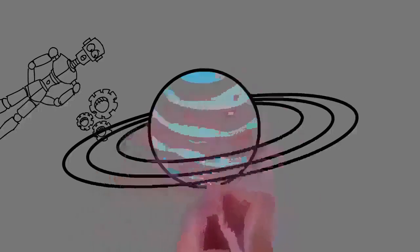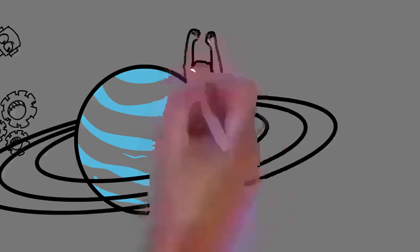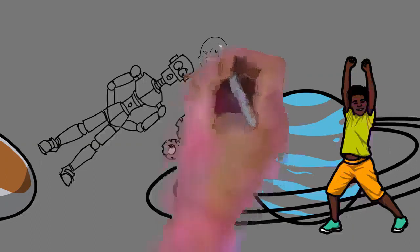Earth has a dynamic atmosphere which sustains Earth's surface conditions and protects it from most meteoroids and UV light at entry. It has a composition of primarily nitrogen and oxygen. Water vapor is widely present in the atmosphere, forming clouds that cover most of the planet.